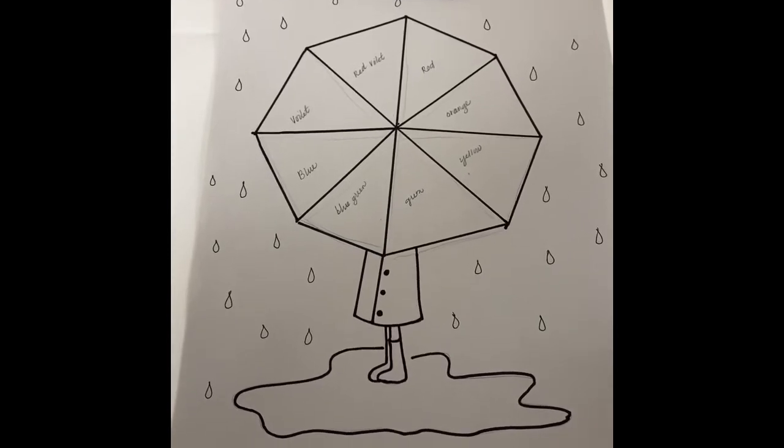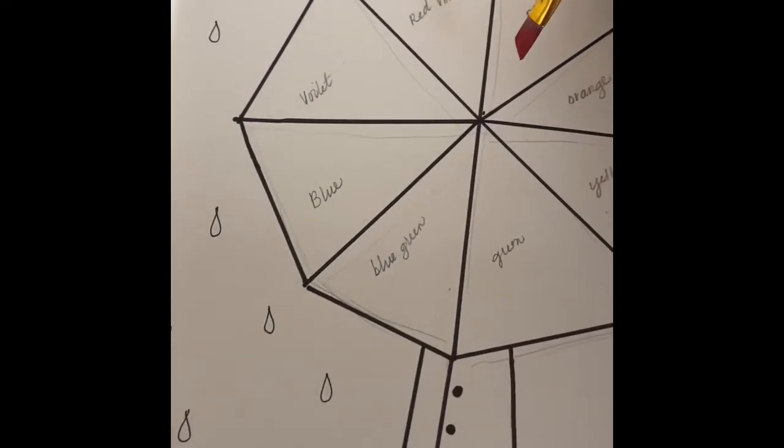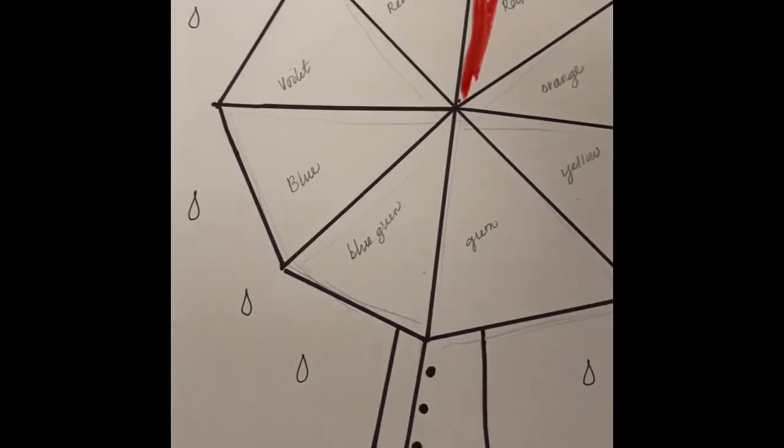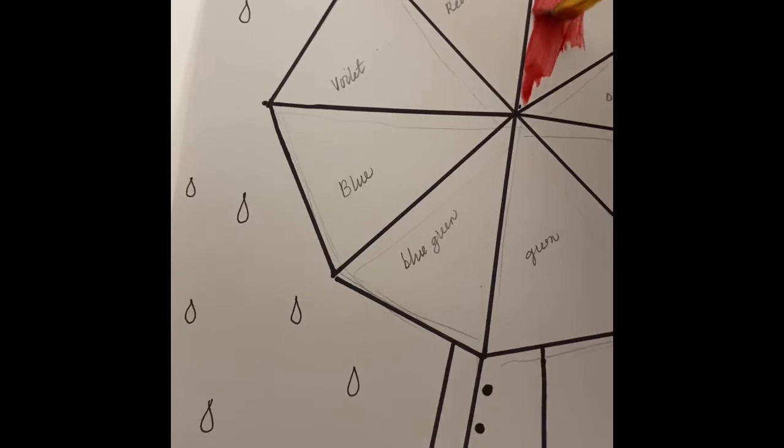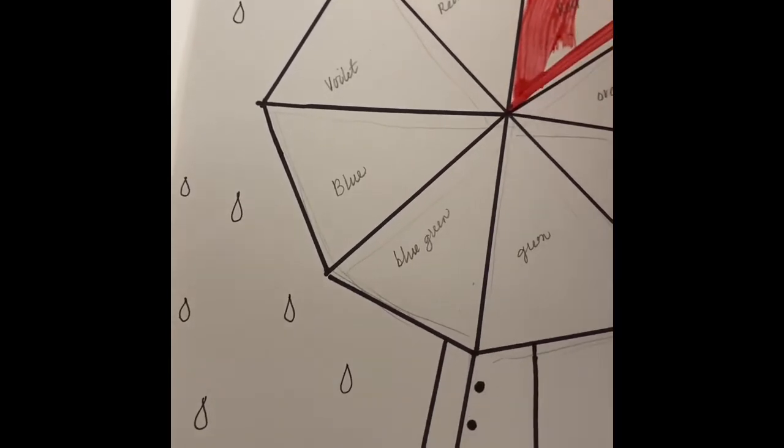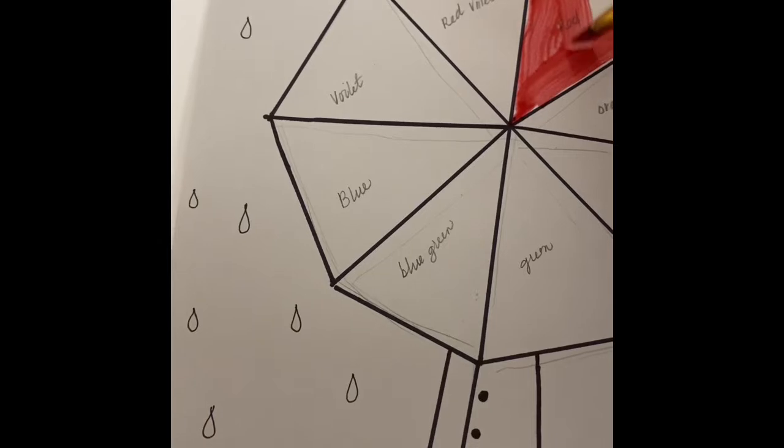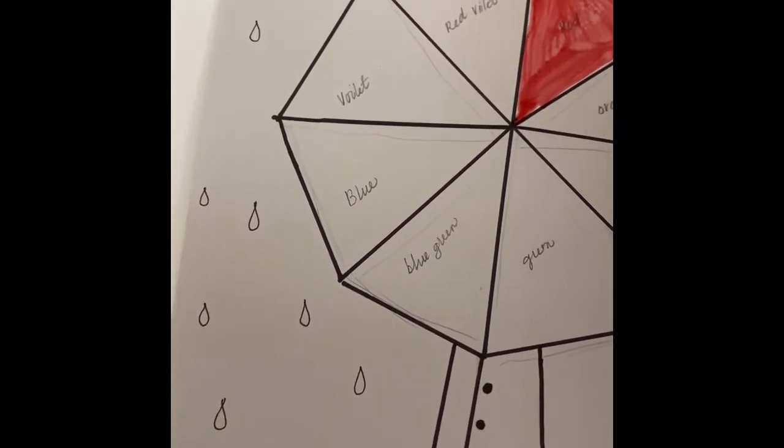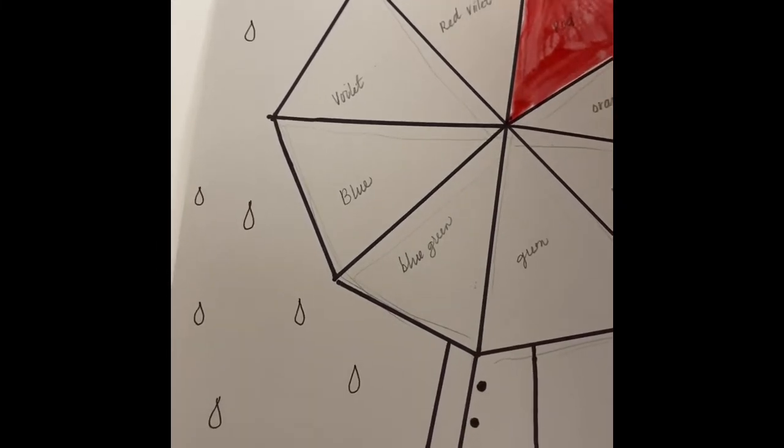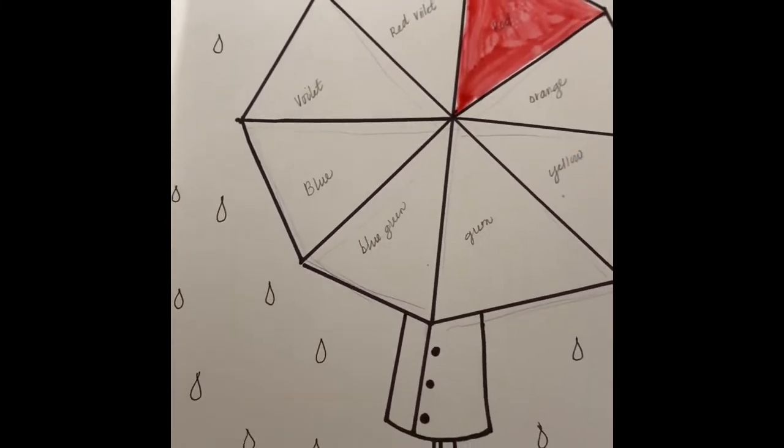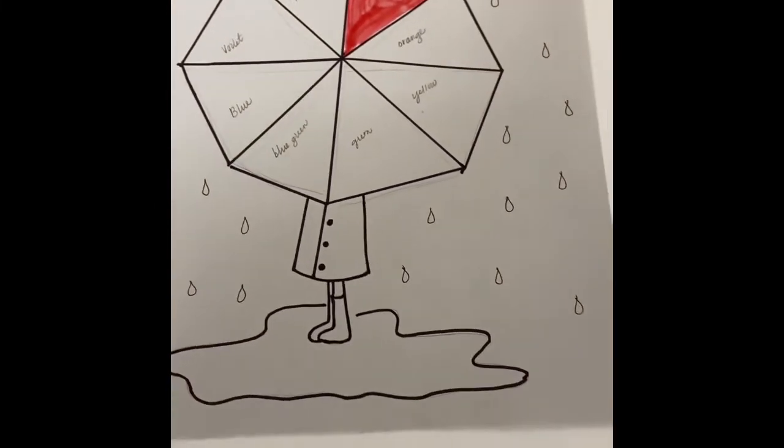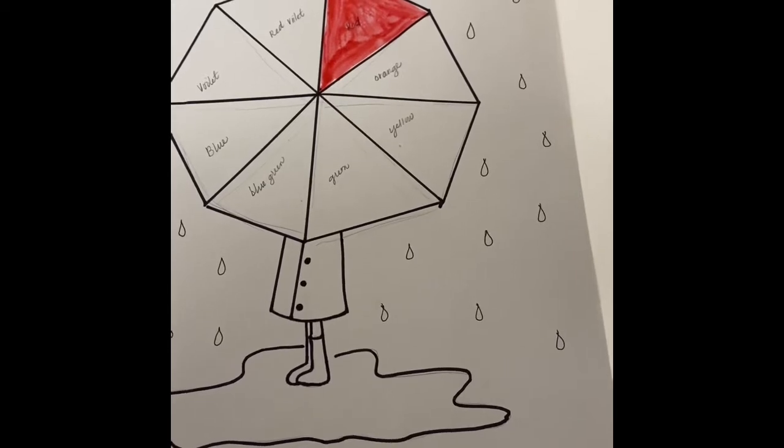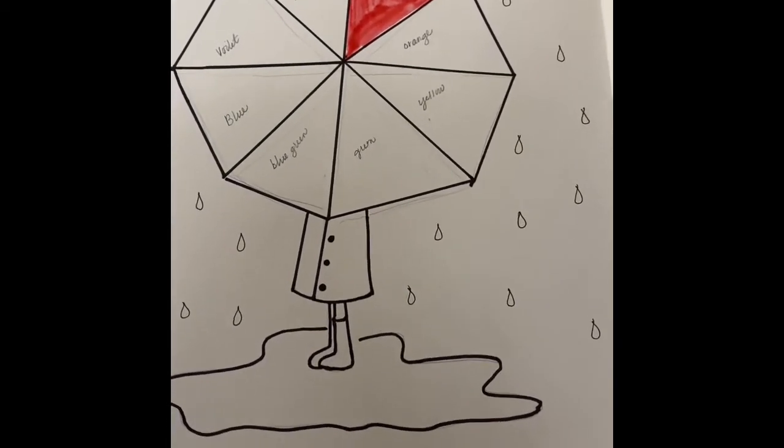Start with our color red first. Our next color is orange. Orange is beside red because when we put our yellow in, yellow and red equals orange.